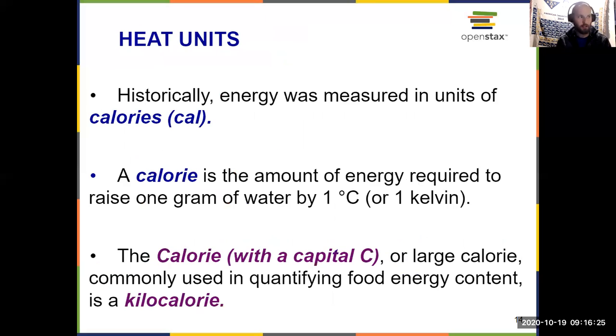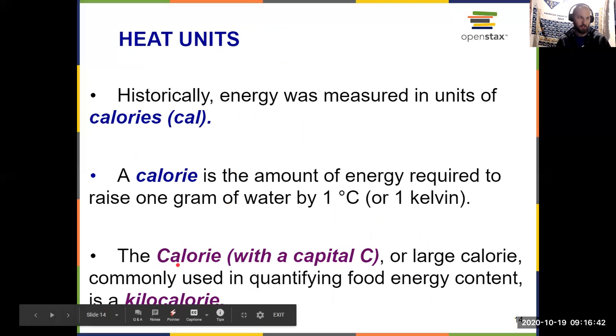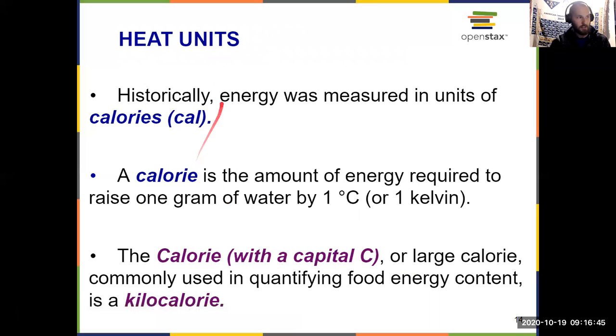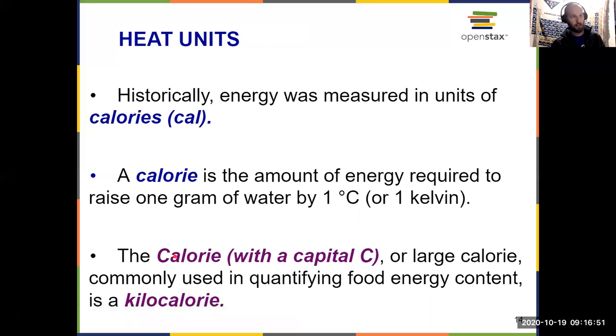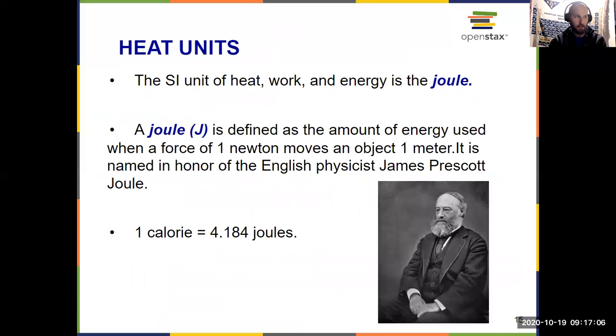So we need units to describe these things. Traditionally, energy was measured in units of the calorie, which is abbreviated as CAL. Different from the calorie you see associated with food. You'll notice on the side, if you're looking at nutrition facts, that's CAL with a capital C, is actually 1,000 of these calories, kilocalorie. And the original definition of that calorie was the amount of energy required to raise the temperature of one gram of water by one degree Celsius. But the problem is, if you have a changing pressure and a changing starting temperature, that can actually vary a little bit.